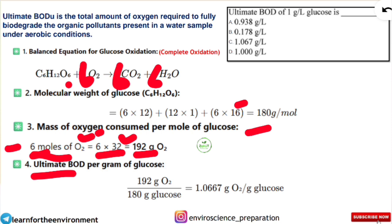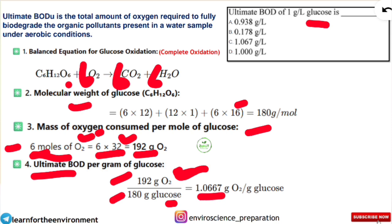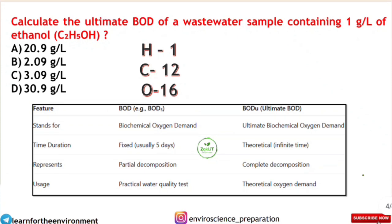Finally, the ultimate BOD formula: Ultimate BOD = mass of oxygen consumed per mole of substance ÷ molecular weight of that substance. Here, that is 192 ÷ 180 = 1.0667 grams of oxygen per gram of glucose. In the question options, option C gives 1.067, so we select that and get full marks.